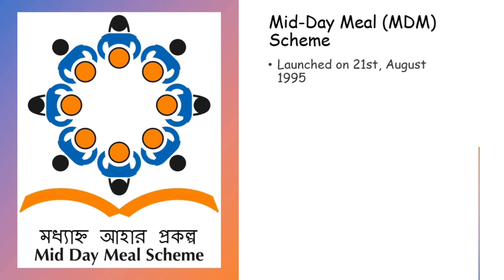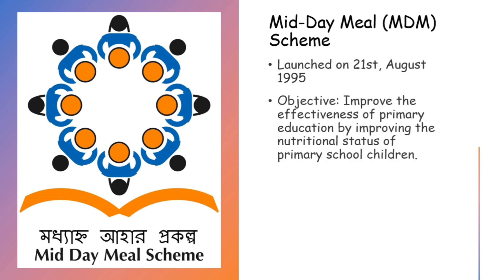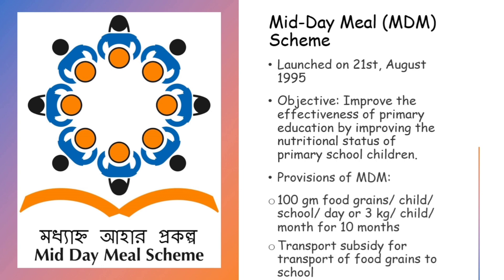The Midday Meal Scheme was formally launched on 21st August 1995. Its objective was to help improve the effectiveness of primary education by improving the nutritional status of primary school children. Under this scheme, central assistance is provided to states for 100 grams of food grains per child per school per day — alternatively 3 kg per child per month for 10 months — and transport subsidy for transporting food grains from the nearest depot to the school.